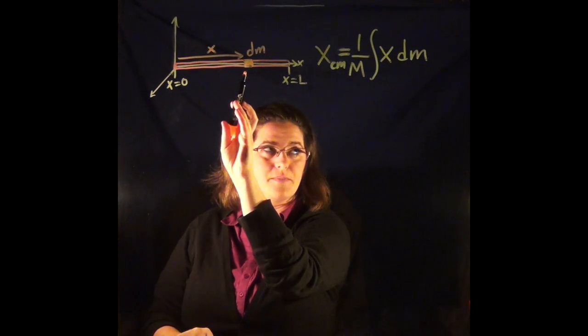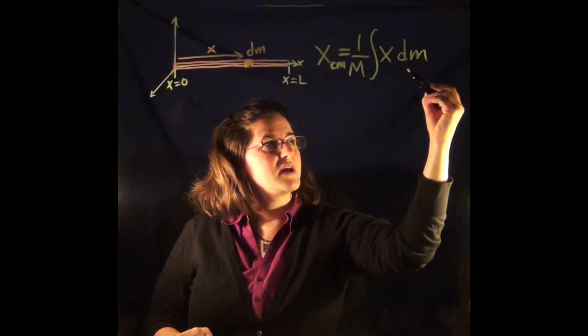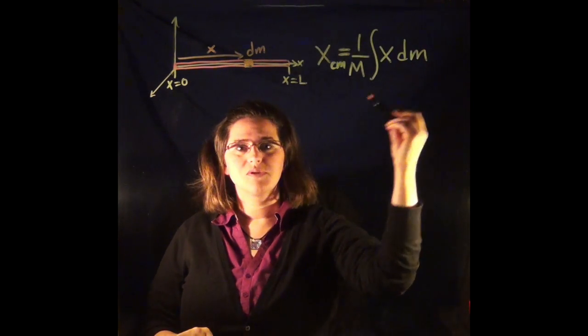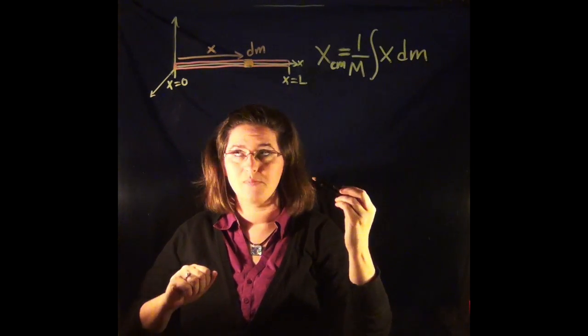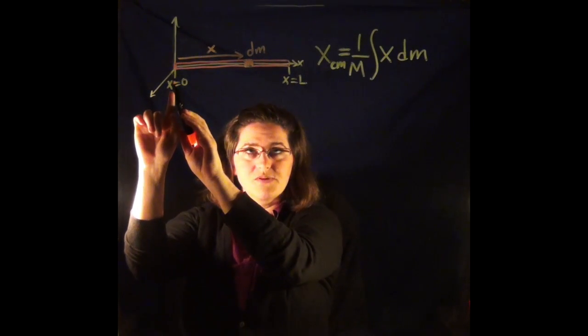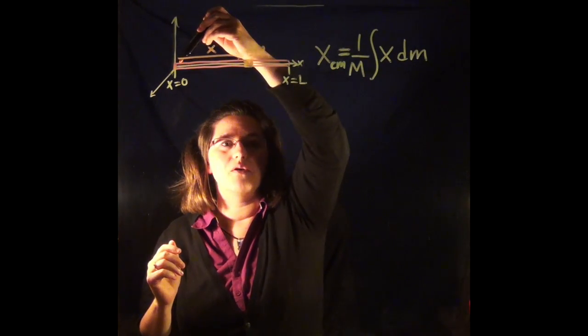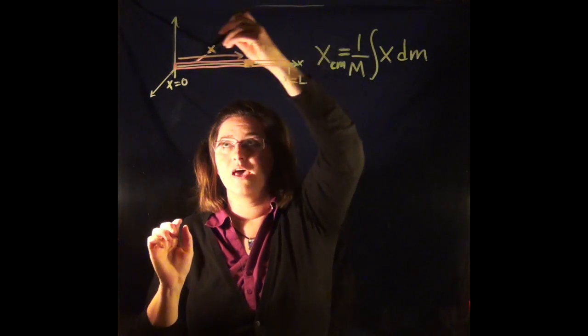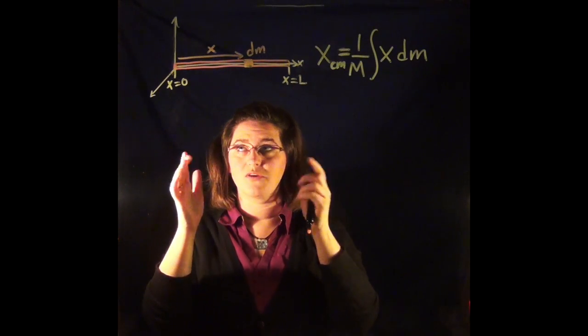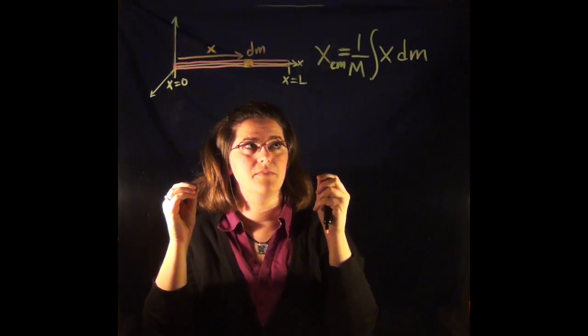Now this little bit of mass dm is going to be integrated. That means summed all the way from x equals zero to x equals L. So by integrating, we take into account all of the little dm's that make up this entire rod. We're summing up all of the little dm's.